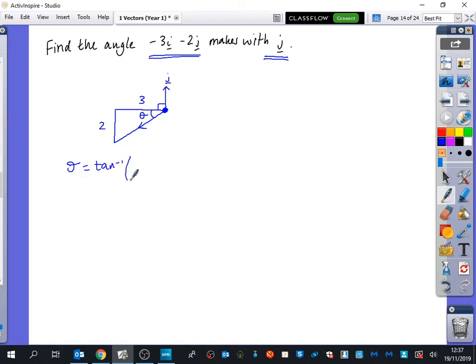To find theta, it would be the inverse tan of what? Of 2 over 3. And the inverse tan of 2 over 3 is 33.7 degrees. So our angle that it makes is 90 plus 33.7, which is 123.7 degrees.